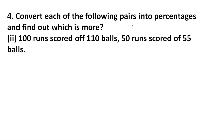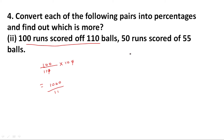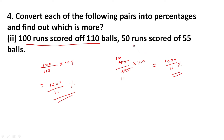Next question: convert each of the following pairs into percentages and find out which is more. First, 100 runs scored off 110 balls — in percentage terms: 100 upon 110 multiplied by 100 equals 1000 divided by 11 percent. Second, 50 runs scored off 55 balls — 50 upon 55 multiplied by 100 equals 1000 upon 11 percent. Both are equal.